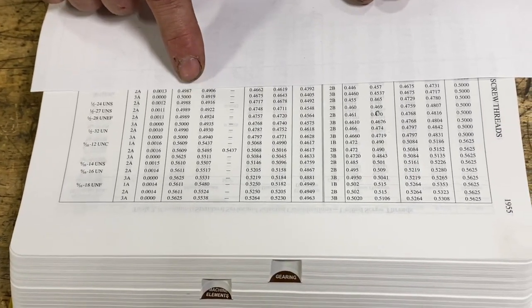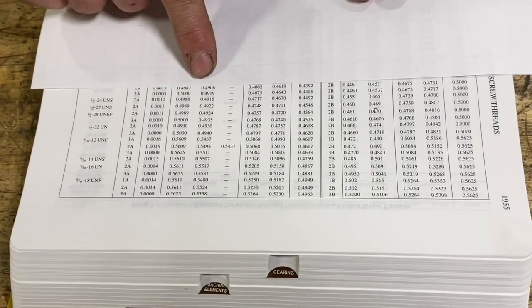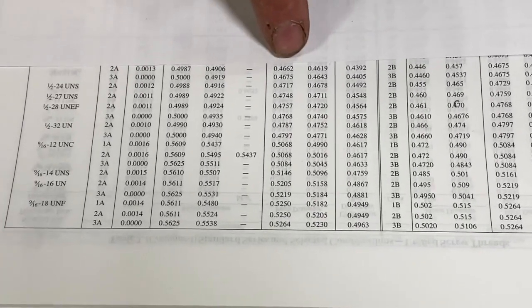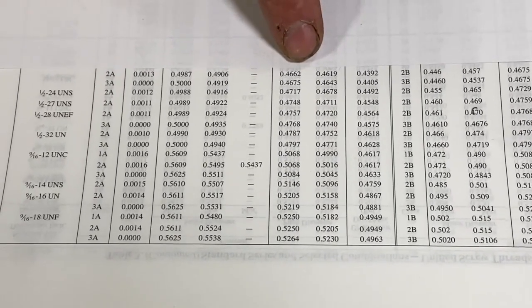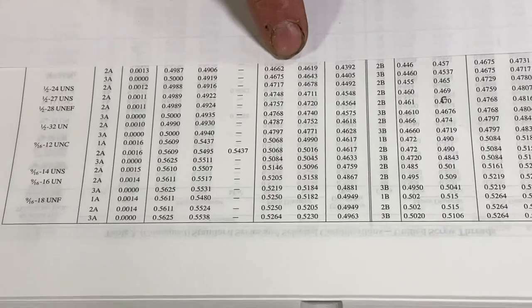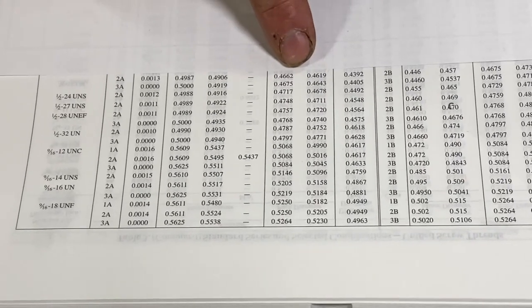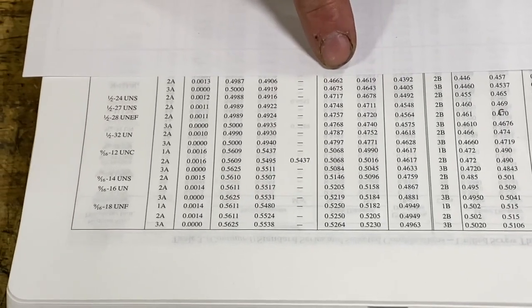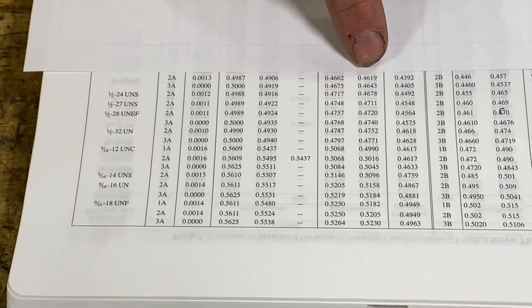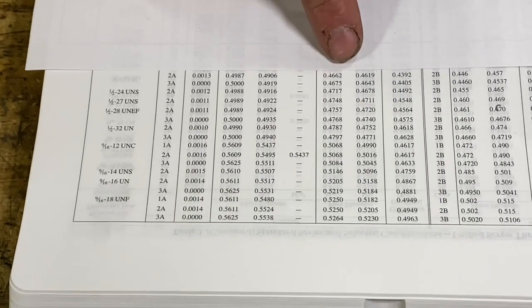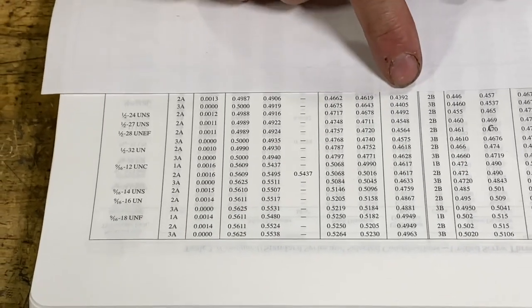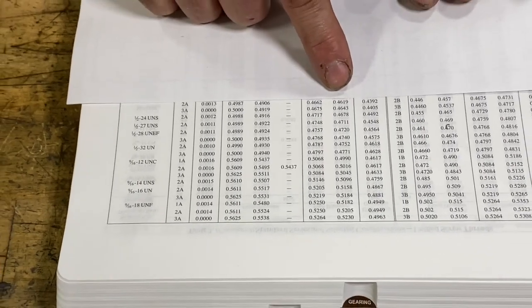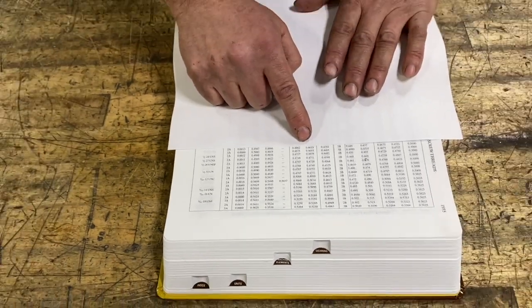We're looking between 0.4987 and 0.4906 for our major diameter. The next column over is our pitch diameters — upper and lower limits — and this is what we're actually going to measure to control the fit of the thread. From 0.4662 to 0.4619, that's our upper and lower limits that control our fit. It does have an additional column for minor diameter, but we're going to calculate our own for this specific application. So let's go to the board and look at our specs.